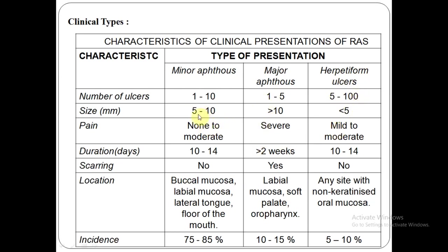Coming to size: minor apthous ulcers are about five to ten millimeters — less than one centimeter. Major is always one centimeter or more. Herpetiform ulcers are always less than 0.5 centimeters. Regarding pain, major apthous ulcers occupy a large area with many nerve endings, so pain can be severe, whereas in minor and herpetiform ulcers, pain ranges from mild to moderate. Major apthous ulcers take more than two weeks to heal, whereas minor and herpetiform ulcers heal within two weeks.